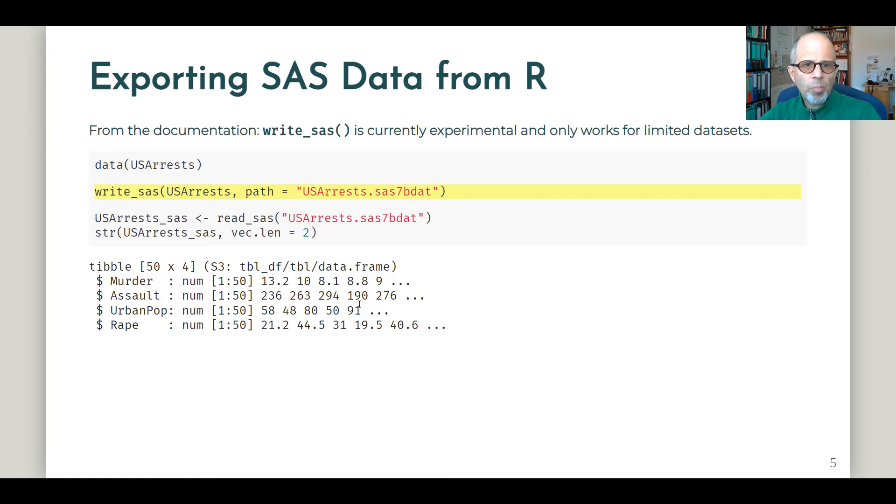How can we export SAS data from R? We can use the write underscore SAS function, but the downside is the documentation says write SAS is currently experimental and only works for limited datasets. So you may have to try out if that works for your use case. Here I just stored a small dataset, US arrests. It worked well, but when I read the data back in, I didn't get these SAS specific formats, but at least the data was written correctly and could be imported back correctly in that SAS 7 BDAT file format.